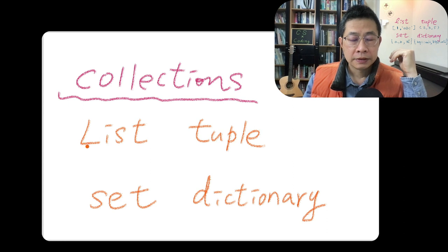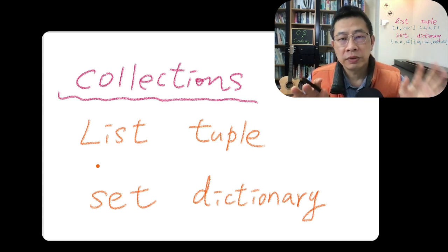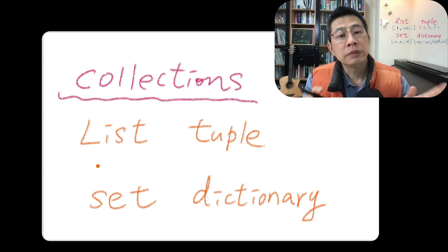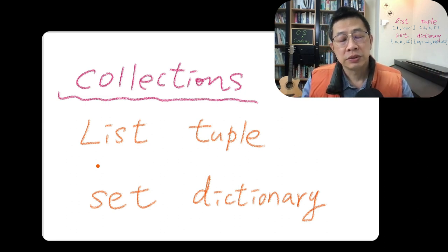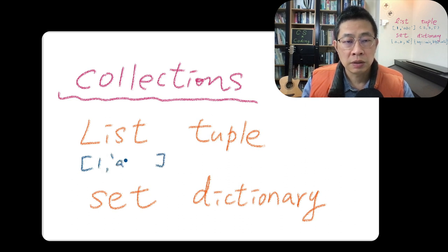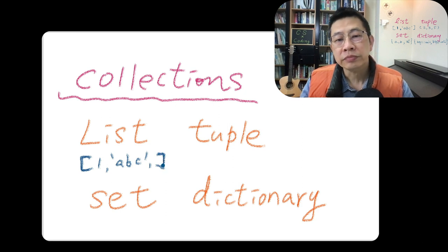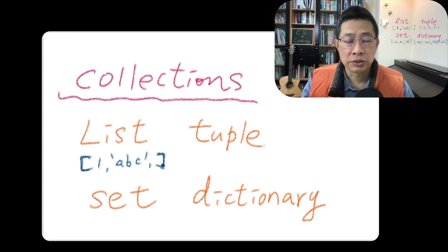In Python, those kind of have its own purpose. List uses a command like this. If you put data here, one, maybe A, B, C, kind of use a square bracket, you actually use a list.